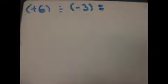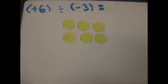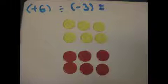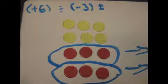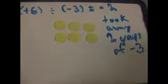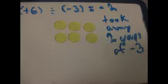In this equation, we are taking away groups of negative 3 until we are left with positive 6. Since we needed to be left with positive 6, we added it in first. So we also have to add negative 6 to 0 pair it. Now we take away groups of negative 3. To be left with positive 6, we took away 2 groups of negative 3. So our answer is negative 2.